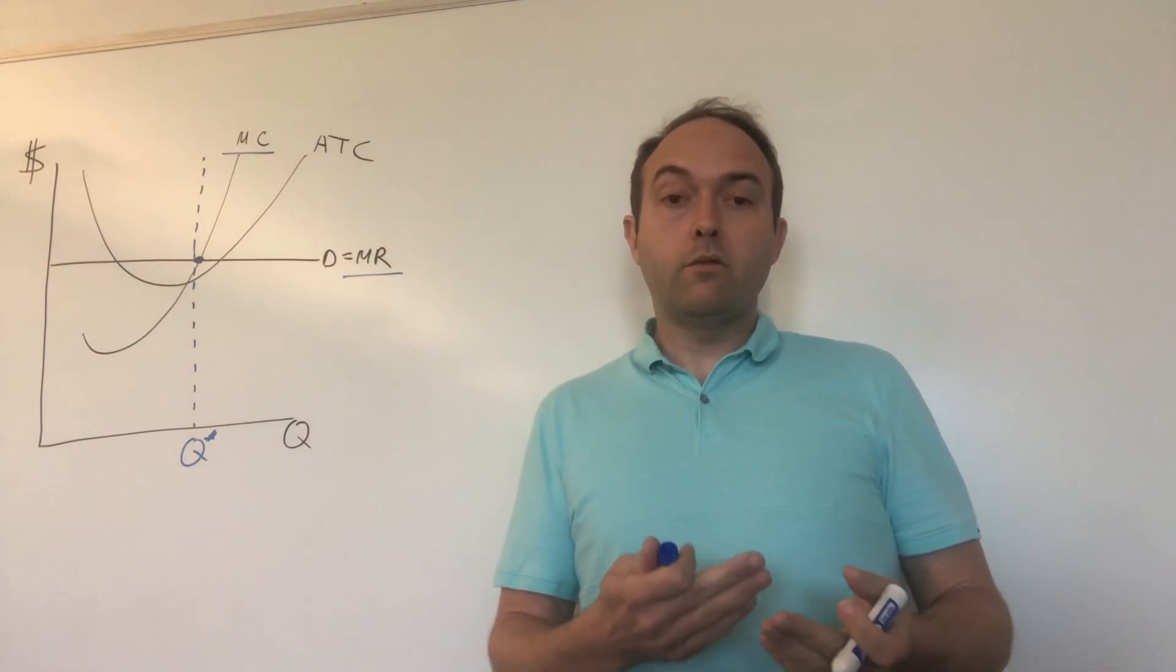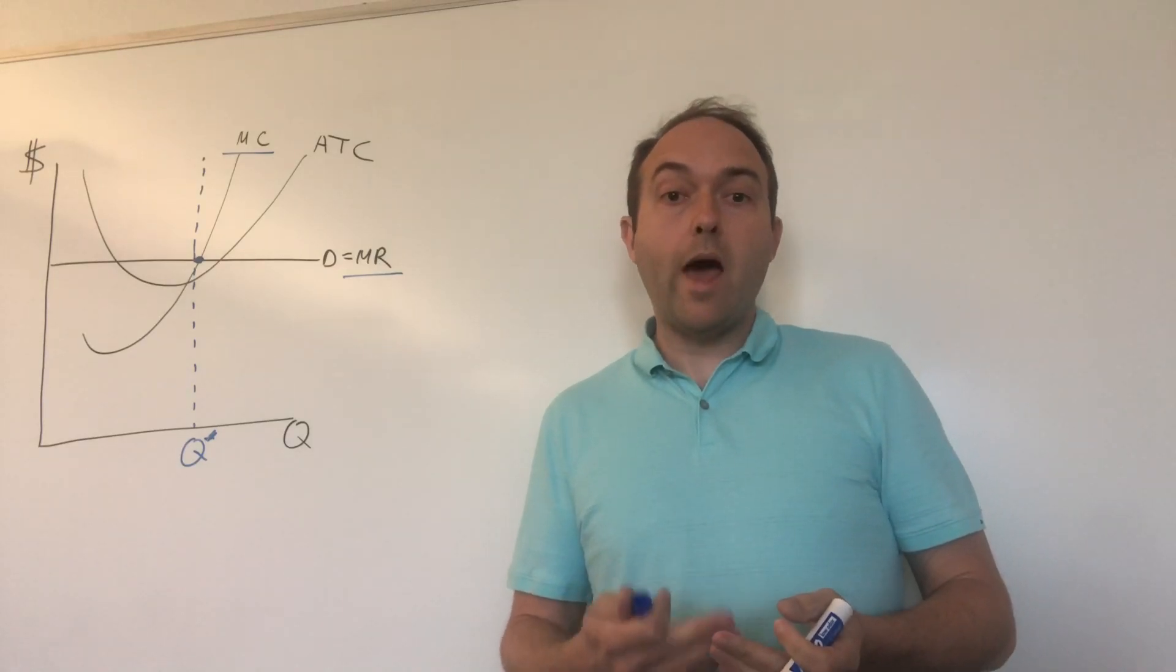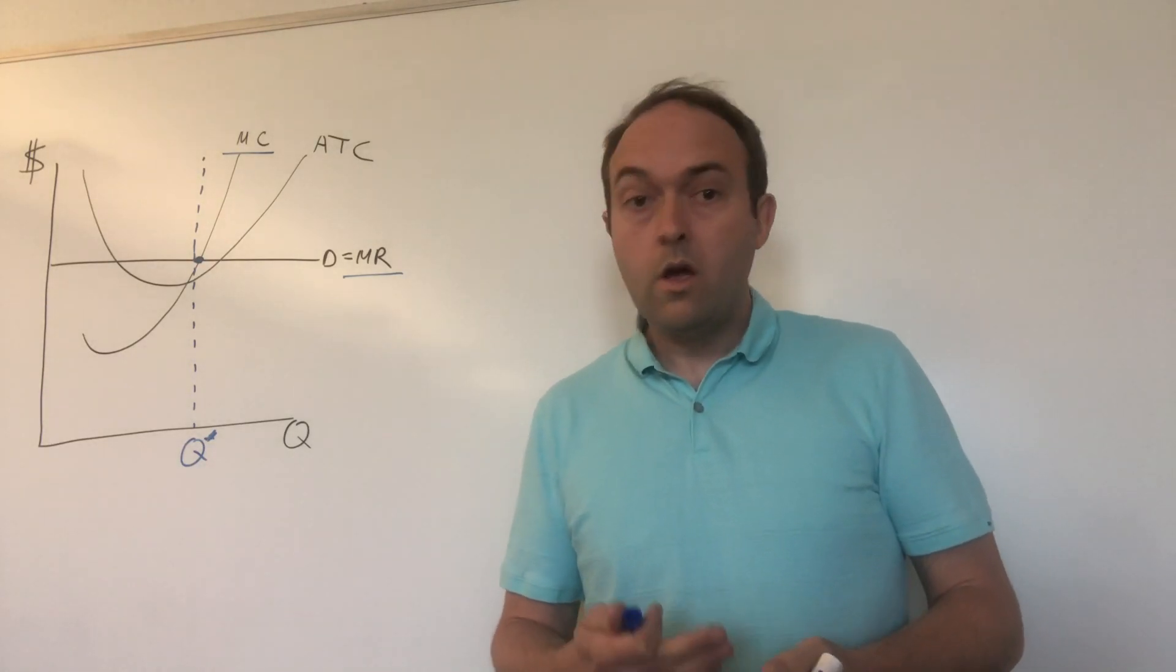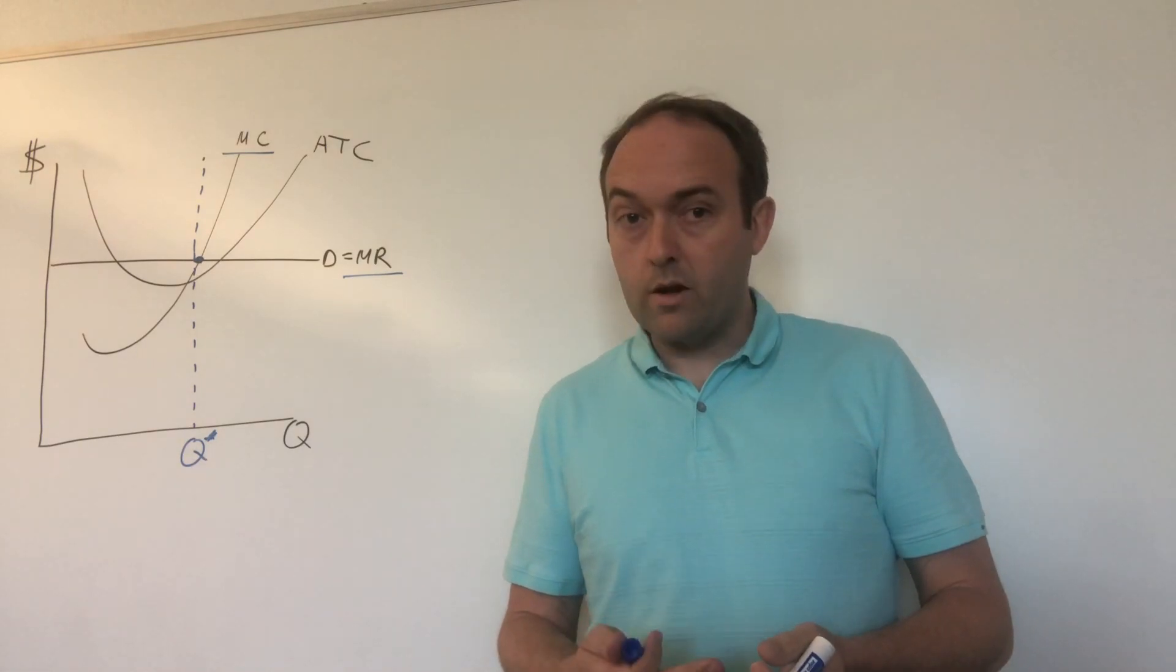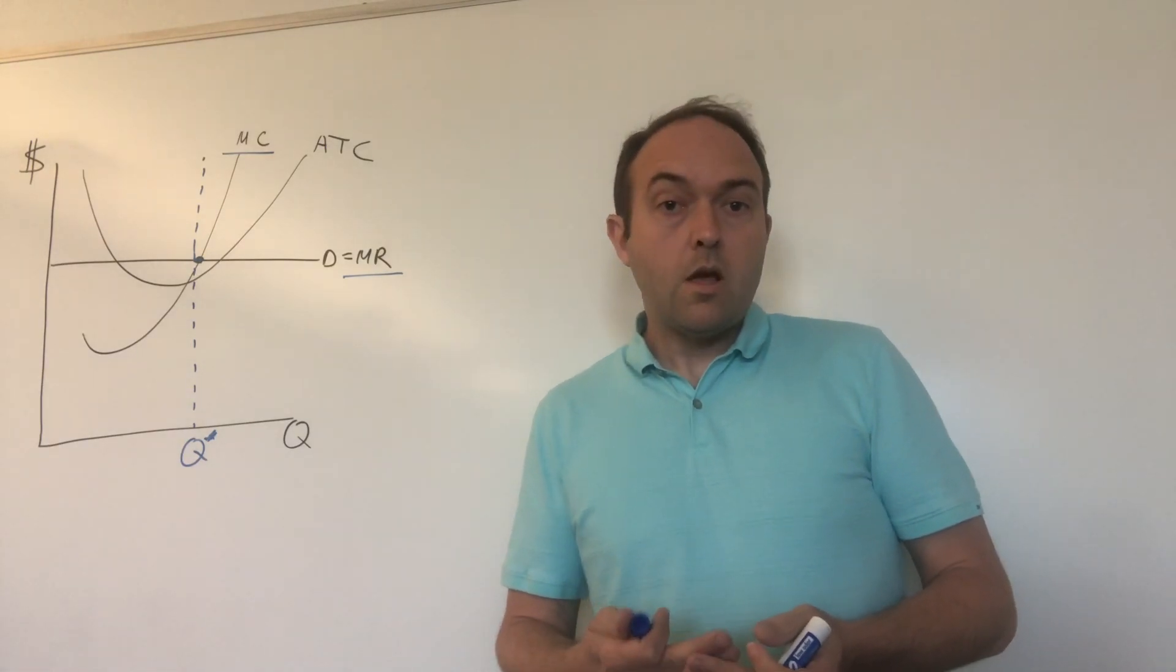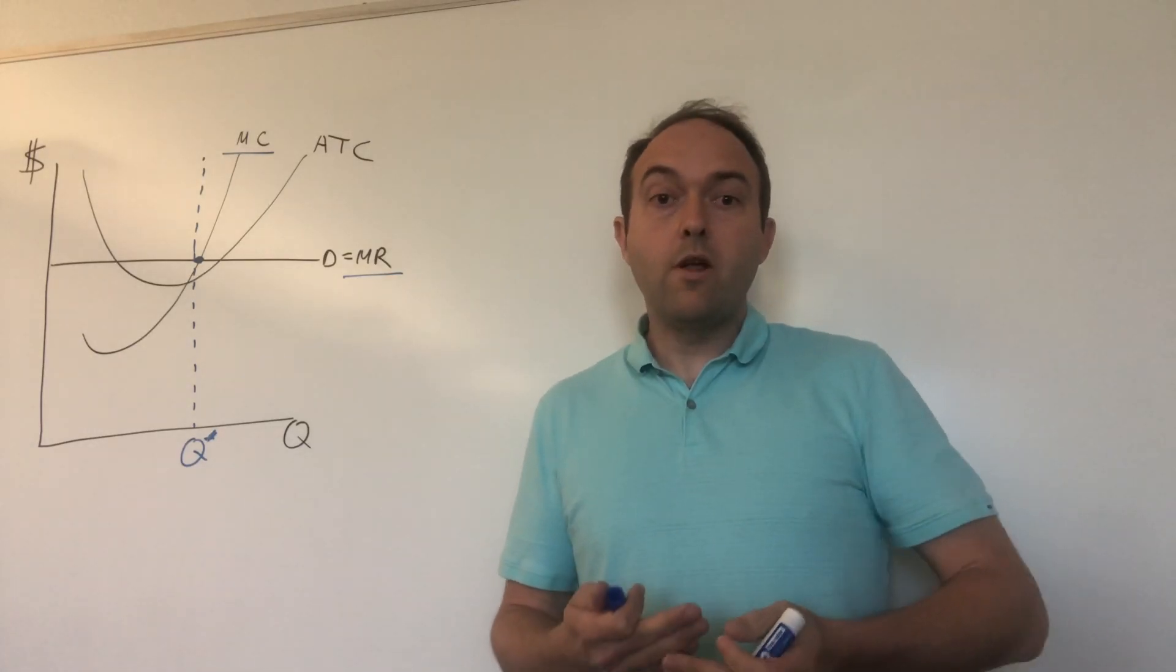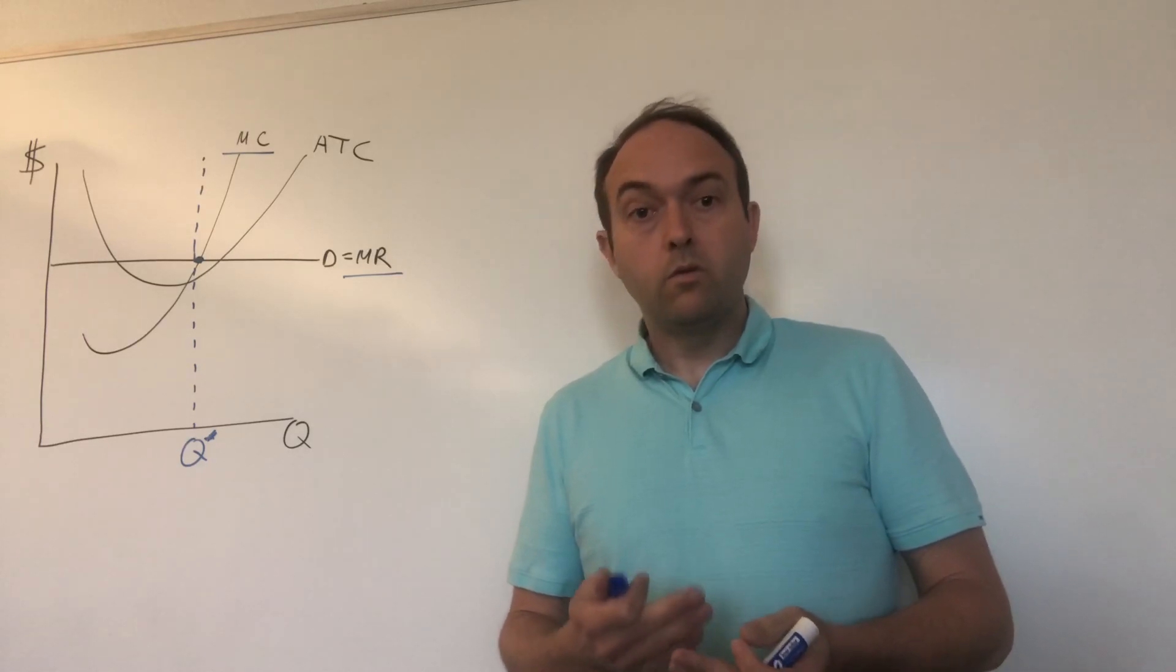Since we've established what the price the firm is going to charge and what quantity they're going to produce, we can now measure the outcomes for the firm. There are three particular outcomes we're looking to find in this course. The first one is their total revenue from selling their product. The second one is the total cost for manufacturing their product. And the third and final outcome we want to measure is their profit for making and selling the product.